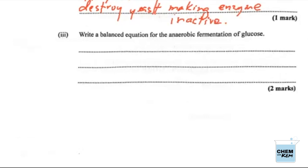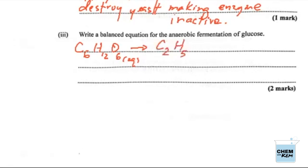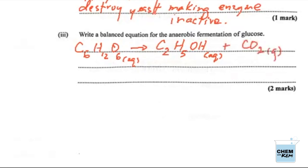And they want us to write a balanced equation for the anaerobic fermentation of glucose — that's part 3. So that's C6H12O6, that's in aqueous medium. This is anaerobic, so we're not using any air; we just need to write this forming ethanol, C2H5. Ethanol seems to be a theme for this paper because this is the third time we're encountering ethanol. So this will be ethanol here in aqueous medium — we'd have to distill it to actually get the ethanol from the water.